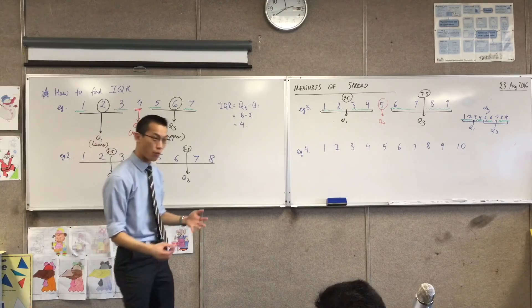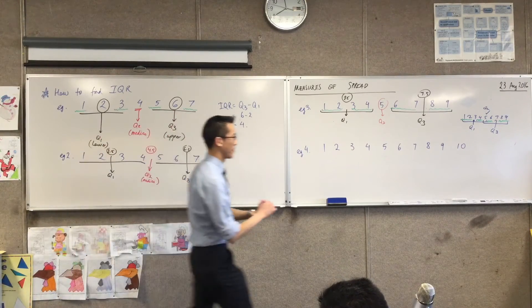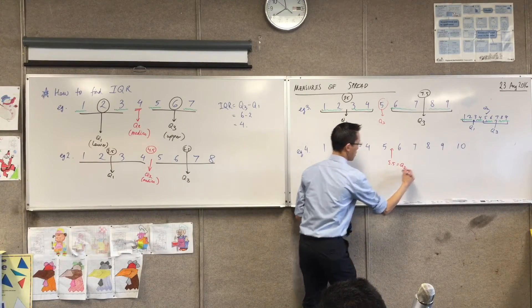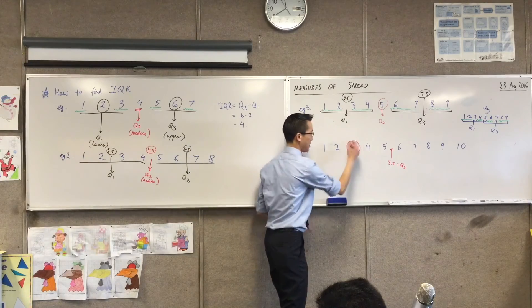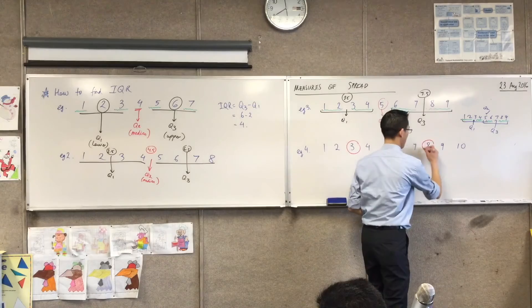Do you want to maybe skip and just tell me which ones Q1, Q2, and Q3 are for this last set? 5.5. Yep. 3. 3. That's nice and easy because you can see there's an odd number over there, and fantastic.